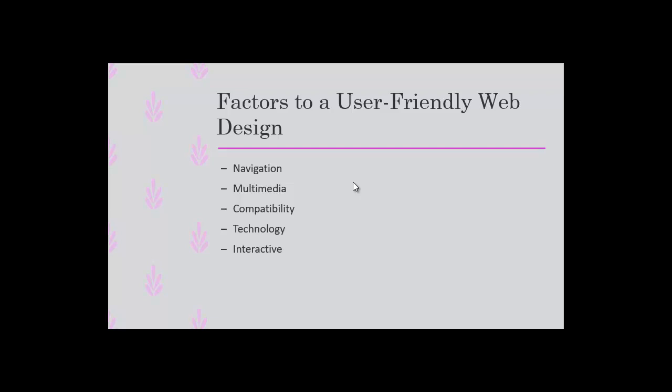Compatibility means your website should be as good on a laptop as on a mobile or any other device. Technology — there is no one technology for design and development, so you should keep upgrading yourself. And interactive — some websites have a comment box, a share on social media link, a heart, or a feedback form, which makes the user feel good and contributes to making your website user friendly.